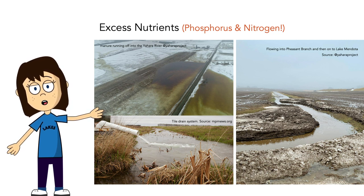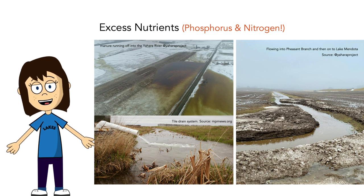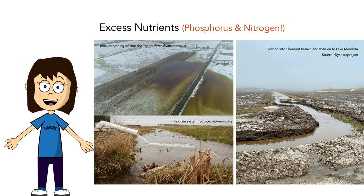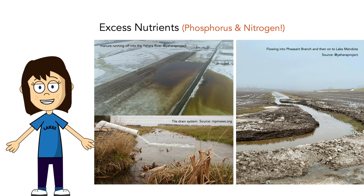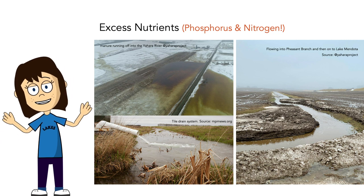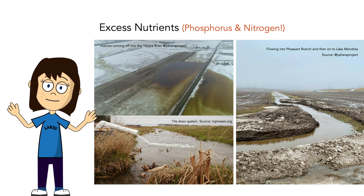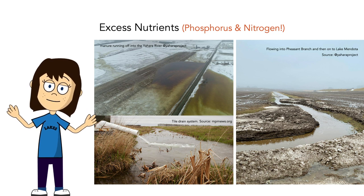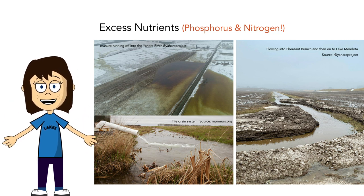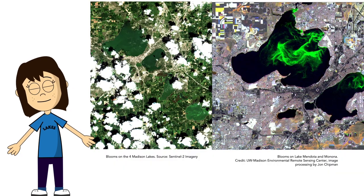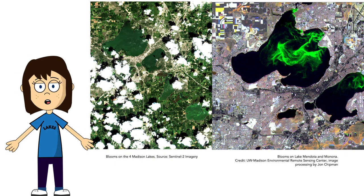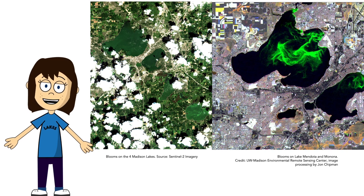The rivers are conduits for nutrients. Nutrients are put down on farm fields, often as manure — we have so many dairy cows that we have a lot of dairy cow waste to deal with, and the most inexpensive option is to put it back onto the field. Unfortunately, this ends up directly in our lakes. And this is not a new problem — we've been polluting our lakes with nutrients for over a hundred years.